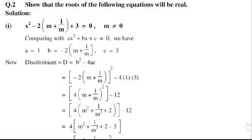So 4 into m plus 1 divided by m whole squared equals m squared plus 1 divided m squared plus 2, minus 12.